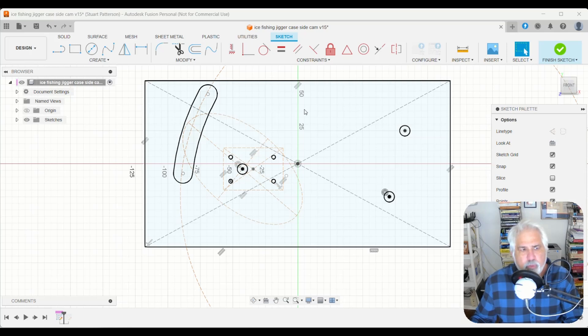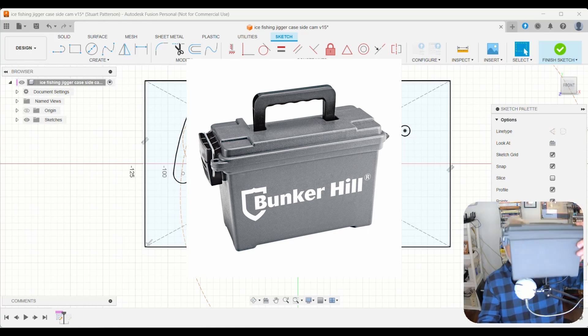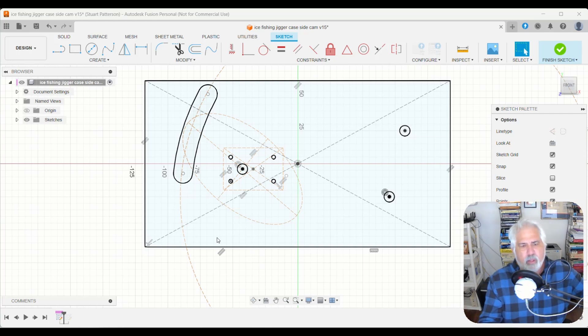All right, so this is Fusion 360. What we're looking at right now is the sketch for the template so you can properly cut out all the correct locations on the Harbor Freight ammo box. So this is the Harbor Freight ammo box here. They're about five bucks, maybe six bucks. The idea is that this Fusion 360 template looks like this when it's all said and done, and that you can lay it up against the body.